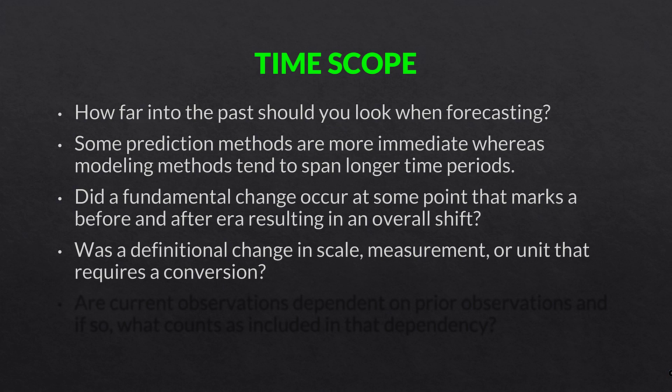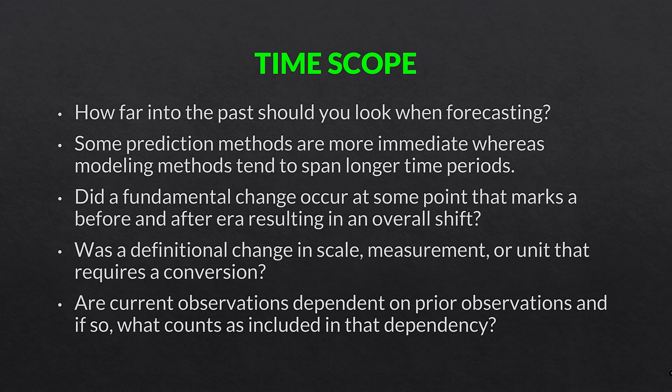Was a definitional change in scale, measurement, or unit done that requires some sort of conversion? It is not uncommon for a business or government to change the way they measure something at some point in time. The data that comes after that change must be modified or converted into the original scale, or vice versa, so that you're working in the same scale when doing the time series. Are current observations dependent on prior observations, and if so, what counts as included in that dependency? In some cases each individual observation isn't independent — it depends on something that happened before it, so the time scope of an individual observation is not singular but spans multiple events in time.